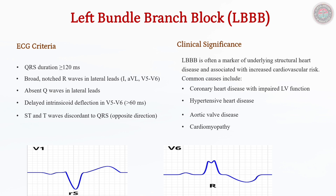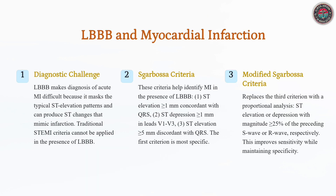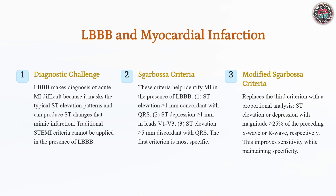Diagnosing STEMI in the presence of LBBB is challenging, as altered ventricular activation distorts normal ischemic patterns. Sgarbossa criteria provide a systematic approach: ST elevation ≥1 mm concordant with QRS in any lead is highly specific for MI; ST depression ≥1 mm in V1–V3 suggests posterior infarction; ST elevation ≥5 mm discordant with QRS is less specific but suggestive. A modified version improves sensitivity by incorporating a proportional ST/S ratio of ≥25%, further refining the identification of infarction in LBBB.